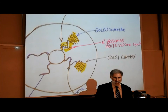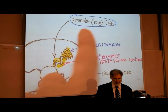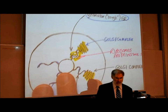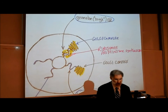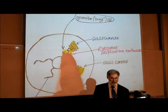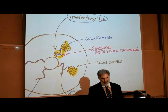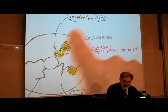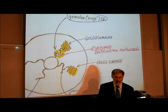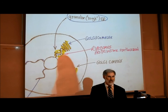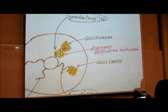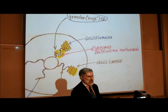The second type of ER is called granular or rough ER — it's called rough because it has little granules called ribosomes associated with it. These ribosomes are located right next to the tubes. This rough ER is also attached to a series of flat sacks that look like pancakes, again known as the Golgi complex.